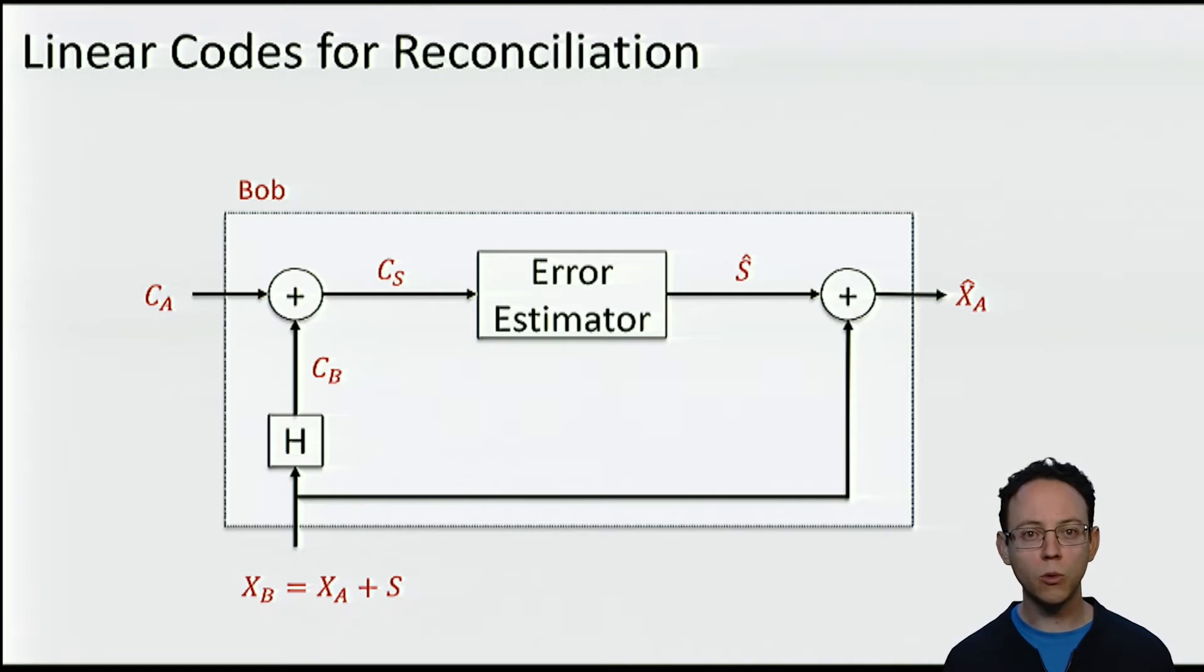Let us now move to Bob and his decoder. The decoder is a little bit more complicated. It takes as input both CA and XB. The first thing that happens in the decoder is that it computes the syndrome of XB, that we call CB. Then CB gets added to CA, the syndrome of XA. We call the resulting string CS. We call it CS because it is indeed the syndrome of the error string. That is, the result of multiplying the parity check matrix with the bit string S. We will prove this little fact later.